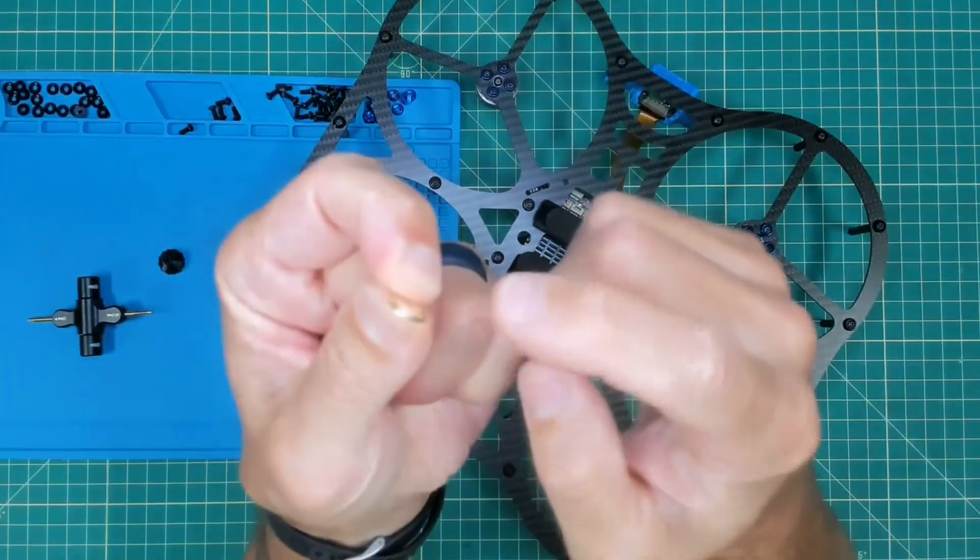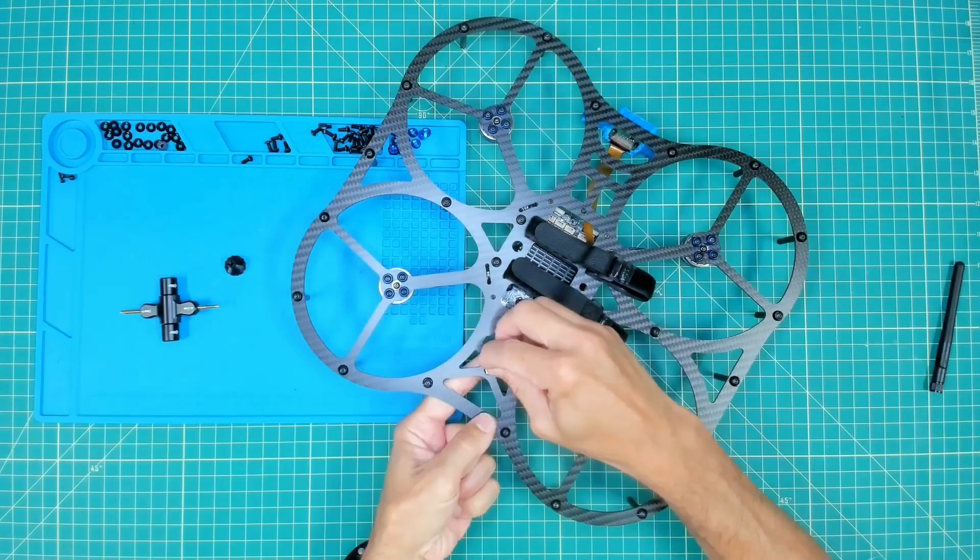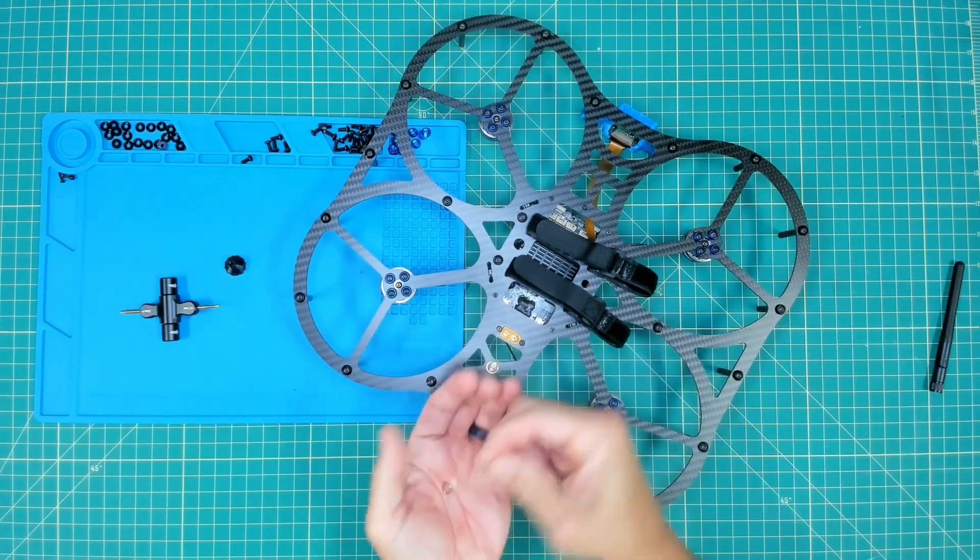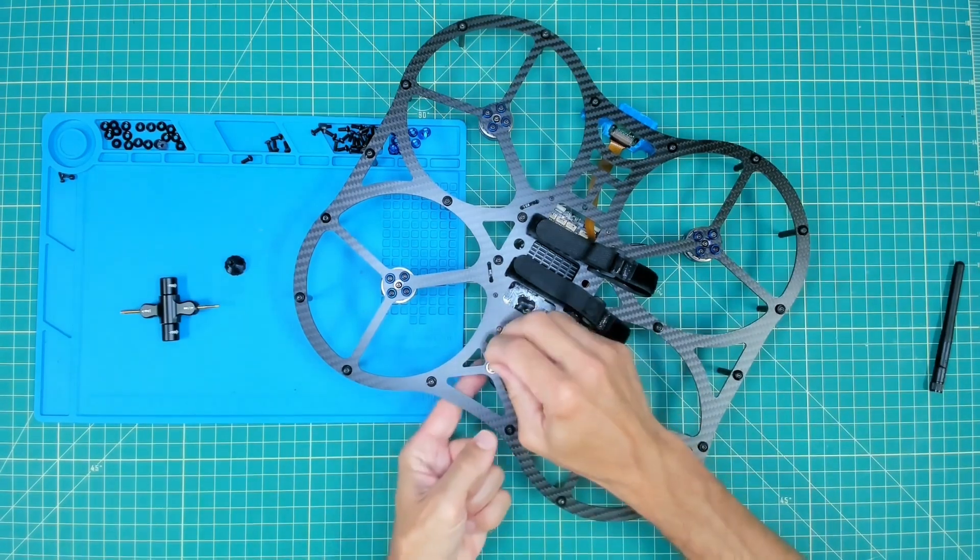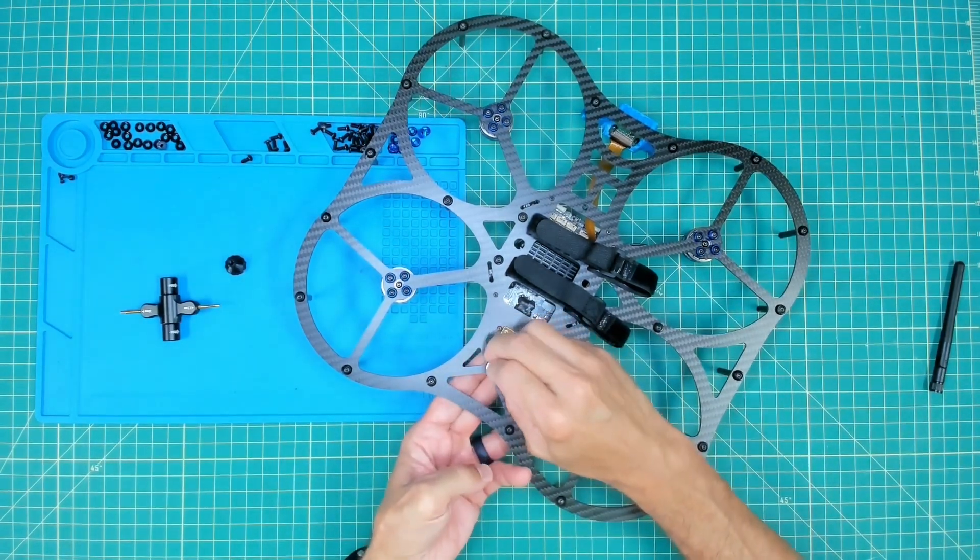I'll go ahead and put that on, those teeth pointed down, our lock washer, and then finally our nut. Hand tighten that as much as you possibly can.